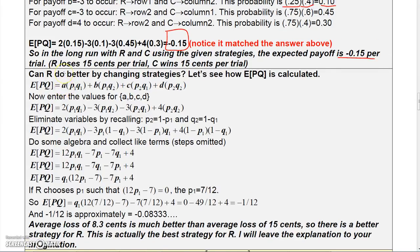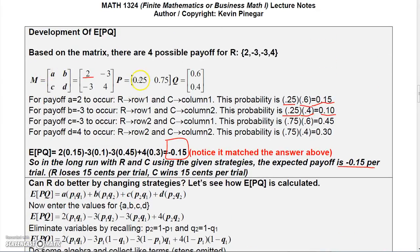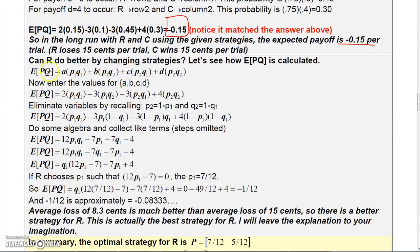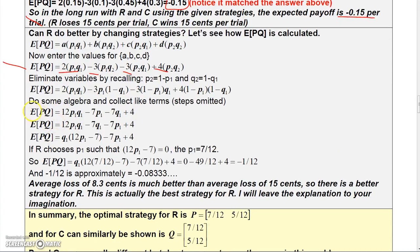Well, let's see how the expected value of PQ is calculated. Basically, you're going to multiply, if you have those three matrices A, B, C, D, and then P1, P2, and Q1, Q2, well, it's basically going to be A times P1, Q1, plus B times P1, Q2, and so forth, if you looked at all the entries. Now, if you enter the values for A, B, C, D, you'd have two, negative three, negative three, and four. We can eliminate variables. Remember that P2 is one minus P1, and Q2 is one minus Q1, so you can replace those variables, and you can do a little bit of algebra, which I omitted the steps, and you can get that the expected value of PQ is 12P1Q1 minus 7P1 minus 7Q1 plus 4, and then do a little more rearranging and some more algebra, and you can get that this is the expected value of PQ.